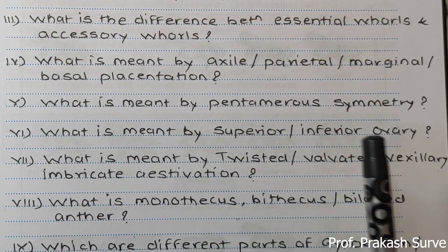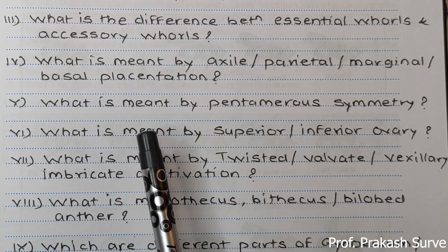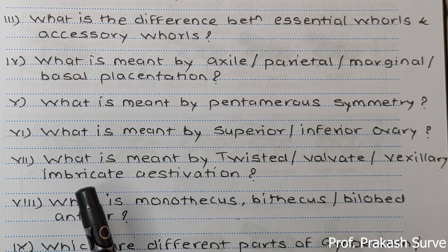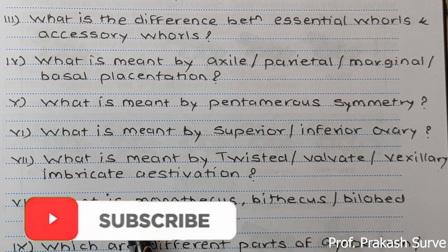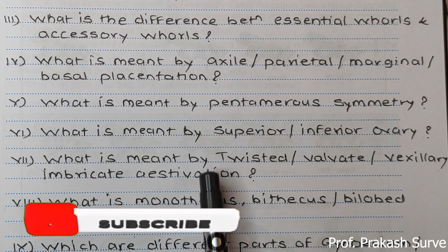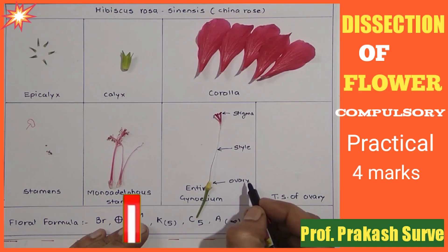These are the viva questions the examiner may ask — only one or two questions will be asked. The remaining marks are for the actual dissection, displaying the floral whorls, and taking the TS of ovary. If you like my channel, please subscribe and share with your friends. A detailed video about the dissection of the hibiscus flower from start to finish is already available on my channel.